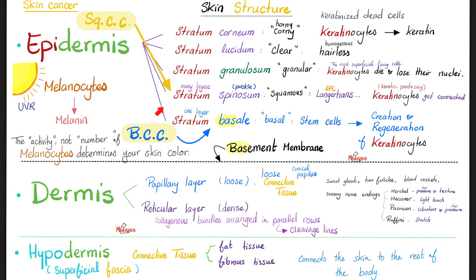The epidermis is made of five layers: stratum corneum, stratum lucidum, stratum granulosum, stratum spinosum, and stratum basale on the basement membrane. Then you have the dermis — papillary layer and reticular layer, which gives us the cleavage lines. And then under the dermis, there is the hypodermis or superficial fascia, which is fibrofatty tissue.